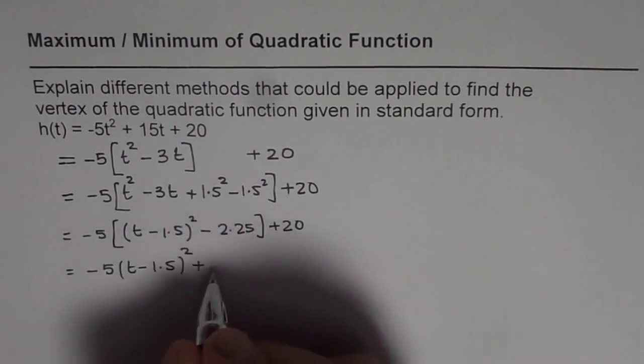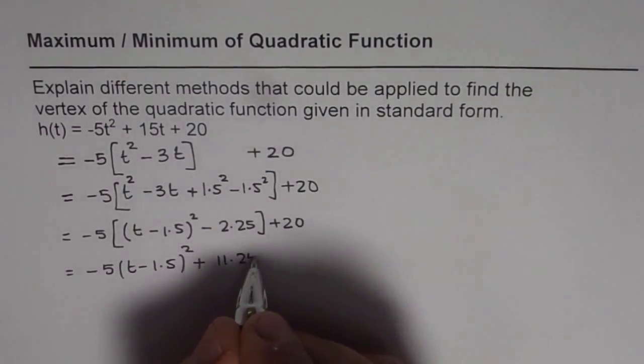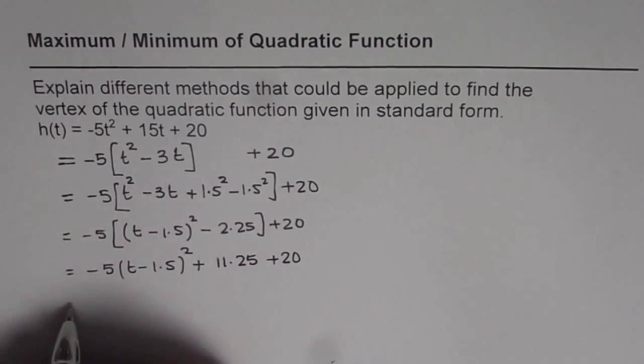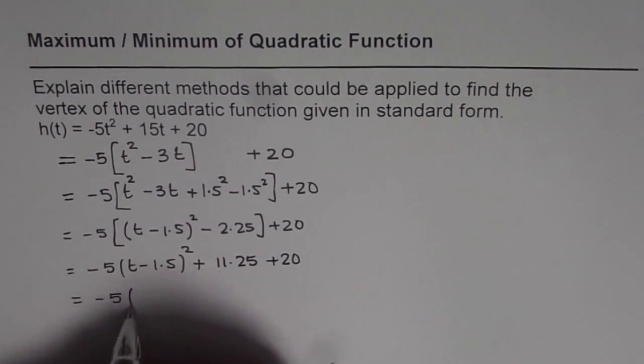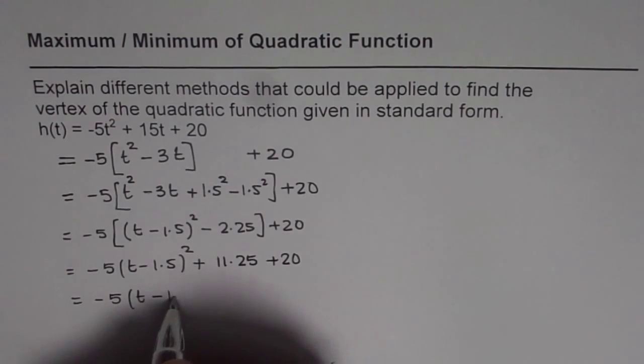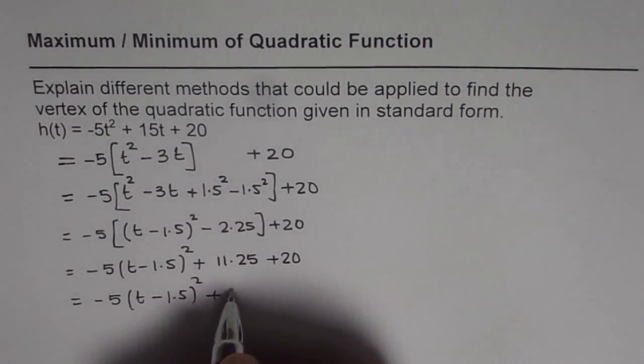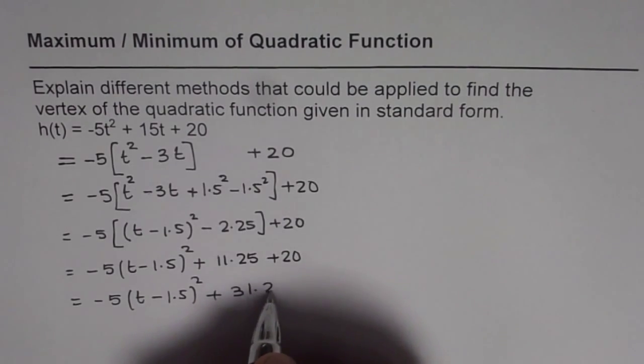So that is 11.25 plus 20. Now we can add the constants and we get our equation. The equation is -5(t - 1.5)² + 31.25.